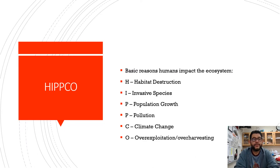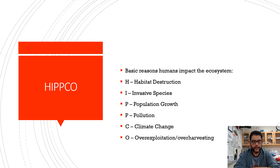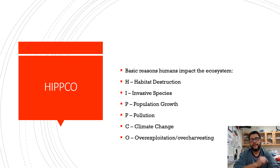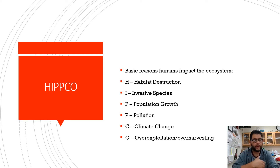The first thing we want to do is make sure you understand the letters HIPPCO. This tends to be a really good way to answer free response questions on why a species or ecosystem might be impacted by humans. This is not specific to any one organism, so you can't just say the whole thing, HIPPCO — you have to be specific to each organism. These tend to be the reasons.